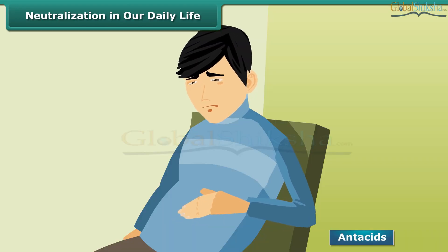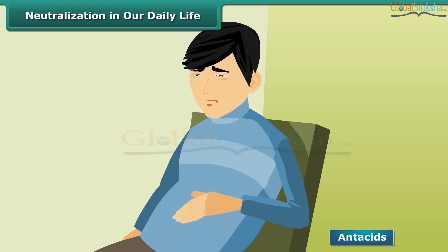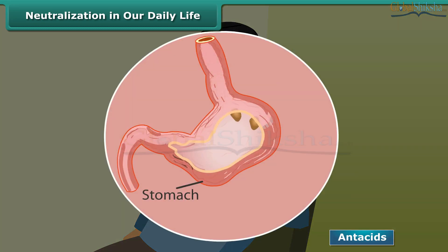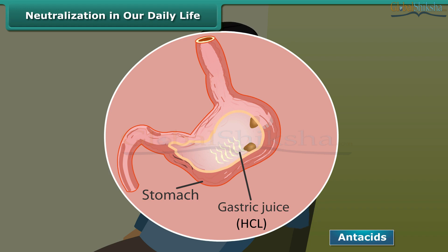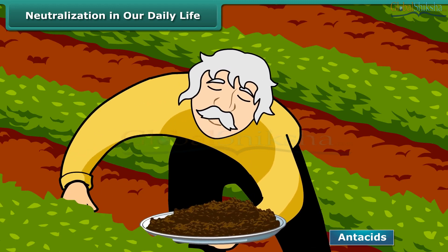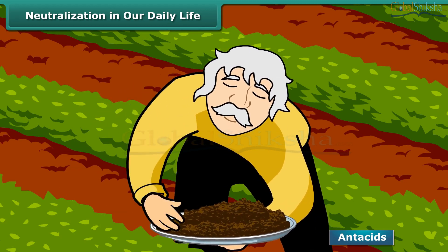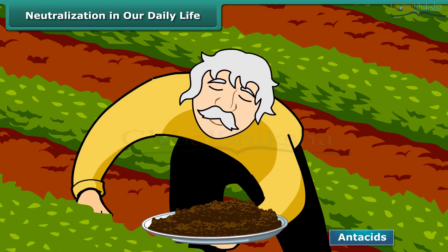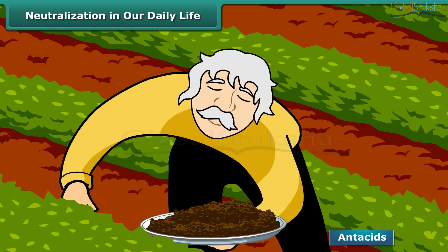Sometimes we feel inflammation in our stomach. Our stomach secretes hydrochloric acid (HCl), a very strong acid which helps us to digest food. But too much secretion of acid in the stomach causes inflammation. To relieve the sensation of inflammation, an antacid is taken. Antacid contains a base that neutralizes the excess acid in the stomach. Soils which we use for cultivation can become acidic or basic in nature. The basic soils are treated with organic compounds which release acid, so the soil becomes neutral.